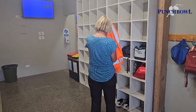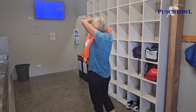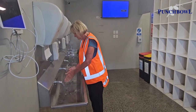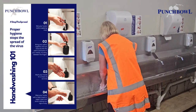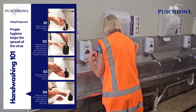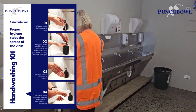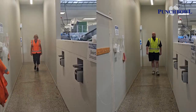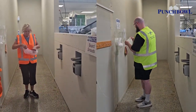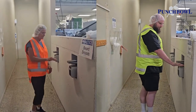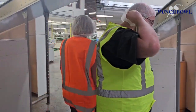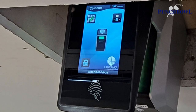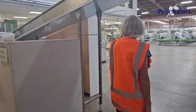Before entering the food production area, put on your allocated hi-vis or apron and make your way to the hand wash station where you wash, dry, and sanitize your hands. Your hair must be fully contained and covered by a hairnet. If you have facial hair longer than one centimeter, you will need to wear a snood. Scan your hand through the palm scanner to clock in for work and report to your supervisor. Your day will usually start with a team meeting which all staff must attend.